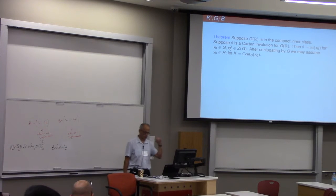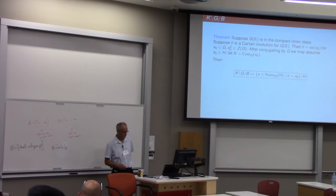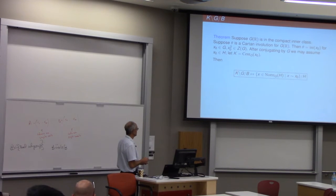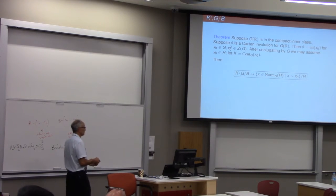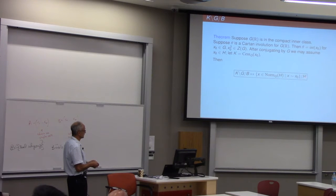And after conjugating by G, I can assume that this element is actually in H. And let's do that, and then let's let K be the centralizer. So this X0 is the base point I was talking about earlier. Then here's the beautiful theorem. The space KGB is in canonical bijection with the following set: it's the elements of the normalizer of H such that X is G conjugate to this X0, and all of that is modulo conjugation by H.